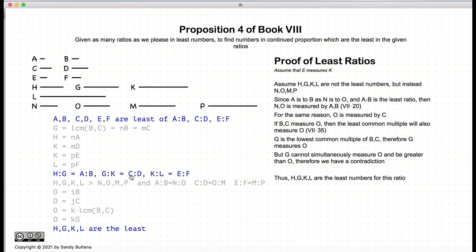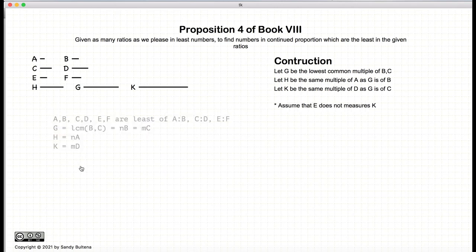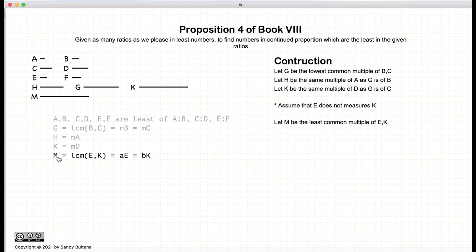Remember, we were proving this when assuming that E measures K. So we have to backtrack and start working with the proof when E does not measure K. We left off with G being a multiple of B and C, H being a multiple of A the same number of times B is of G, and K being a multiple of D the same number of times C is of G. Now we're not assuming that E measures K. So we continue and come up with a number M such that it's the least common multiple of E and K, so E and K both measure M.